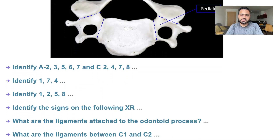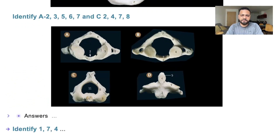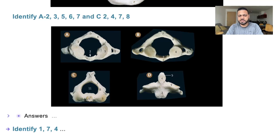Let's identify the important structures. Number 2 is the fossa for the odontoid peg. Number 3 is an impression of the vertebral artery. Number 7 is the posterior tubercle. Number 6 is the posterior arch. Number 5 is the lateral mass of the atlas. And number 8 is the transverse process of the atlas.